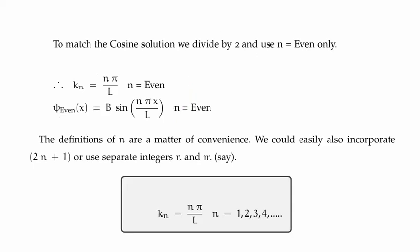Now the definitions of n are only a matter of convenience and we could write it in lots of different ways. So generally speaking we can say that k sub n is n pi over L, where n can be any integer, but we know that we are going to get alternate cosine and sine solutions for each alternate n, whether it is odd or even.